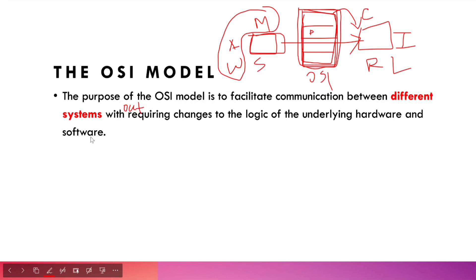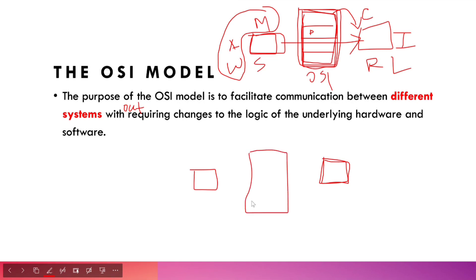So the OSI model allows different systems — mobile, computer, different architectures — to communicate correctly. It helps protect the underlying architecture of individual devices so that they do not need to be changed, and communication can still be made effective. That is the purpose of this model. A single model can have multiple layers, and each layer handles a complex sub-problem.